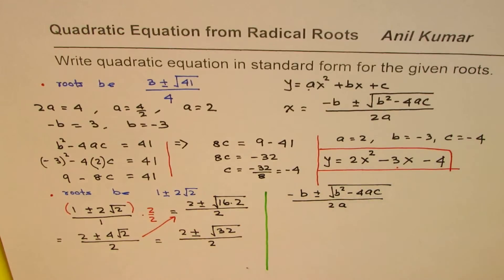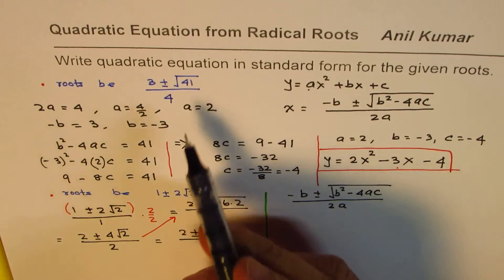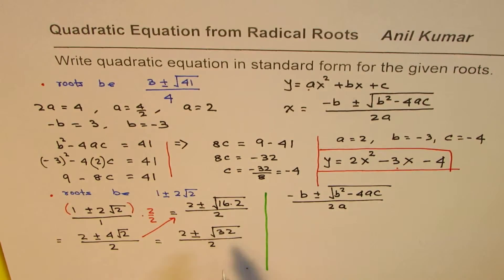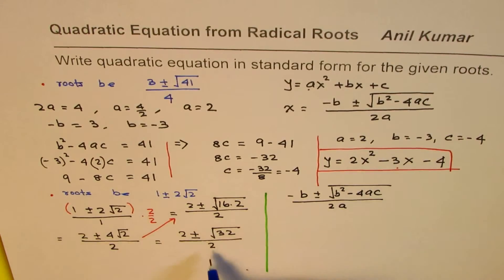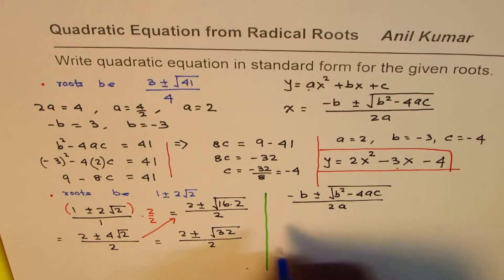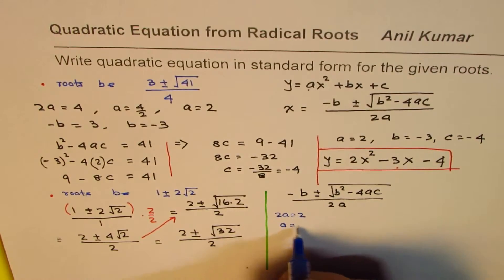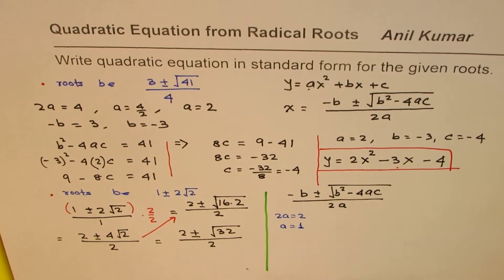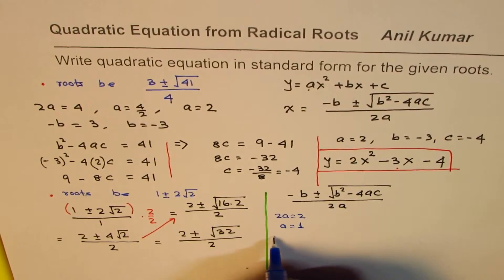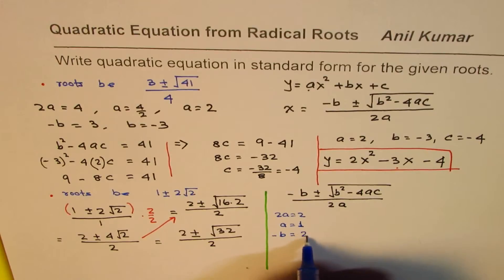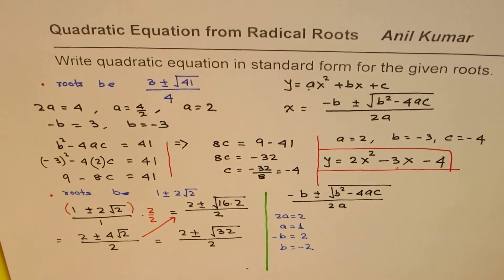Now we have a similar form and it's simpler to compare. From the denominator: 2a = 2, so a = 1. From the numerator: −b = 2, so b = −2. We get the values of a and b.